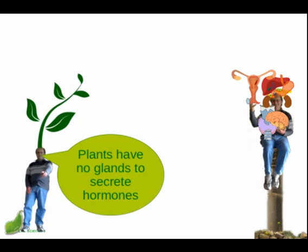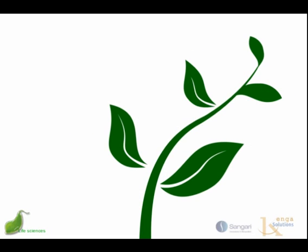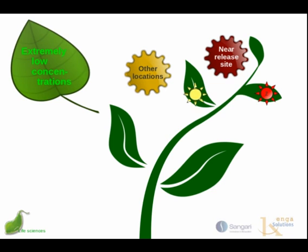We, as mammals, take our glands and our nervous system and our blood transport for granted. Unlike us and other mammals, however, plants don't have glands that produce and secrete hormones. Instead, many of the cells within the plant body can produce and release hormones themselves. Plant hormones occur in extremely low concentrations, but they're able to regulate cellular processes in targeted cells, either near the site of release or at some distance from the site of release, so they move throughout the plant before they have their effect.